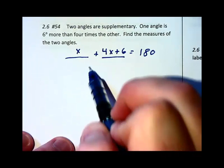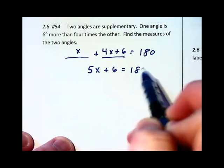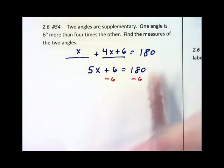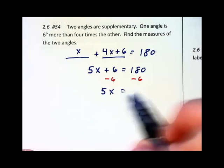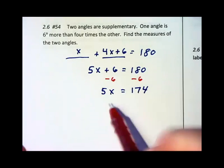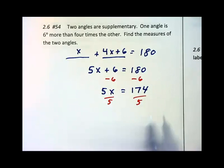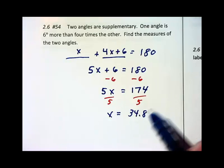Just like before. Combine like terms. 5x plus 6 will equal 180. I'm going to now subtract 6 on each side of the equation. So 5x will equal 174. And then I'm going to divide by 5 and we can see that that will not go in evenly either. We're going to have 34.8 degrees.